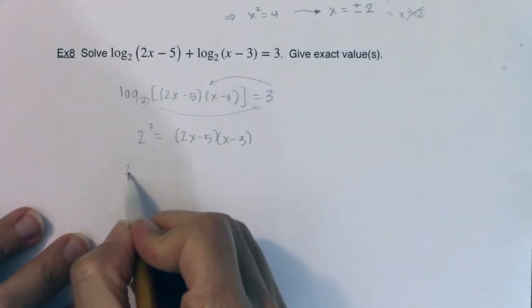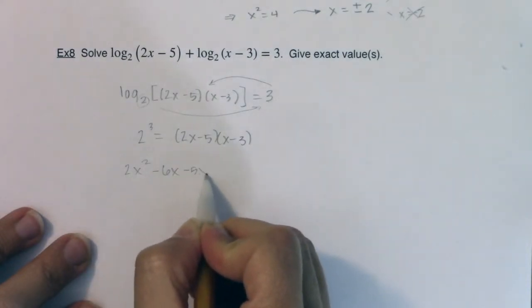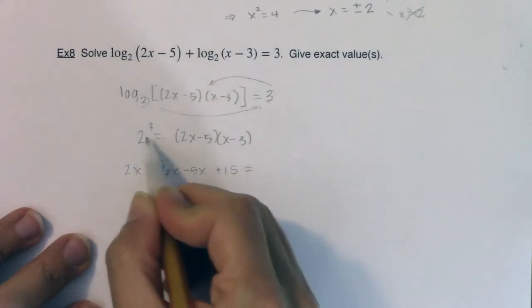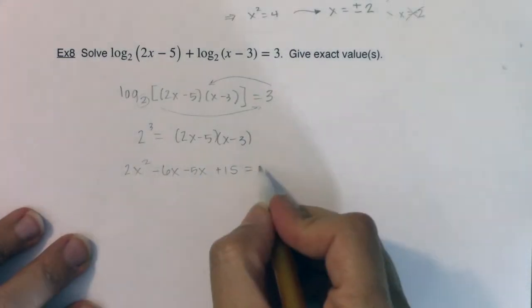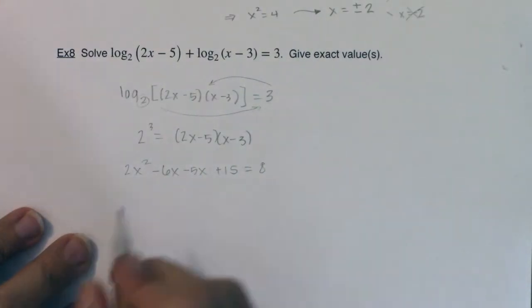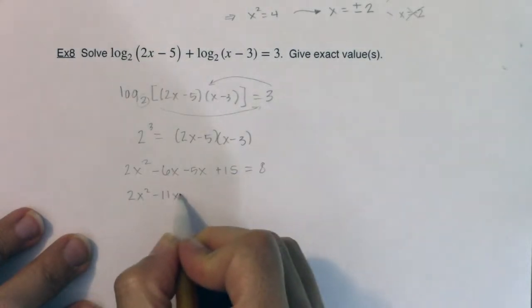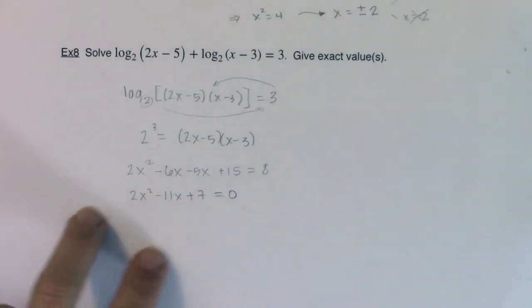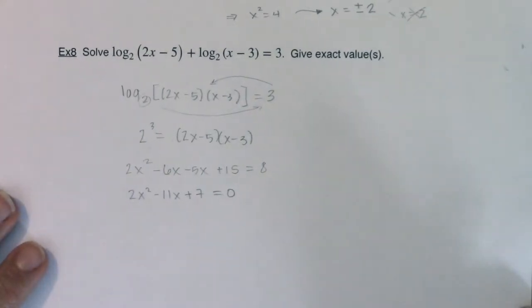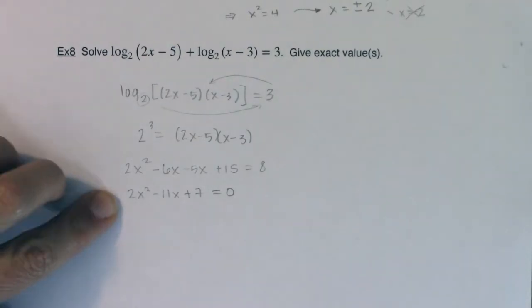Let me go ahead and FOIL this out. This is going to be 2x squared, outer is minus 6x, inner is minus 5x, plus 15. 2 cubed is not 6—2 times 2 times 2, which is 2 cubed, is 8. So I have 2x squared minus 11x, and when I move the 8 over that'll be plus 7 equals 0. As I take a look at this, I don't think there's anything that would multiply to 14 but add up to negative 11, so I think I'm going to need to use the quadratic formula.